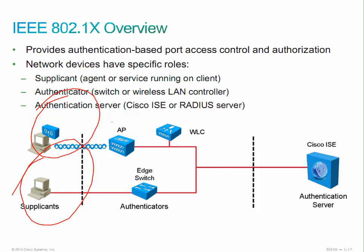802.1X defines the encapsulation of EAP — the Extensible Authentication Protocol. This encapsulation of EAP messages is called EAPOL, which is EAP over the LAN. It was originally designed as part of 802.3 Ethernet in the 802.1X 2001 standard, but has been adapted to support 802.11, FDDI, and others. In 802.1X 2004 we saw the incorporation of 802.1X in wireless networks.